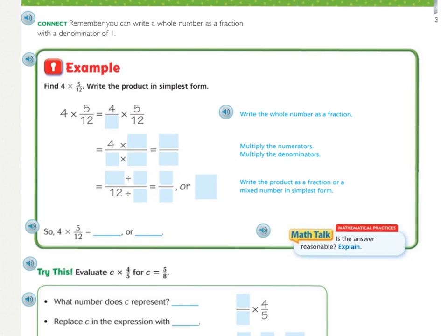Looking at another example. Let's look at this connect right here. Remember, you can write a whole number as a fraction with a denominator of one. Basically, they're saying that if I take two and place it over one, two divided by one is two. Those are the same thing. You can write any whole number as a fraction by just putting it over the denominator of one.